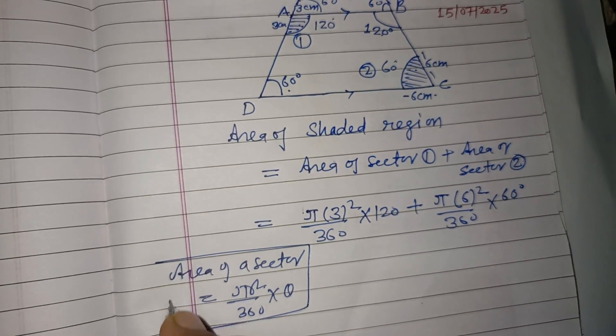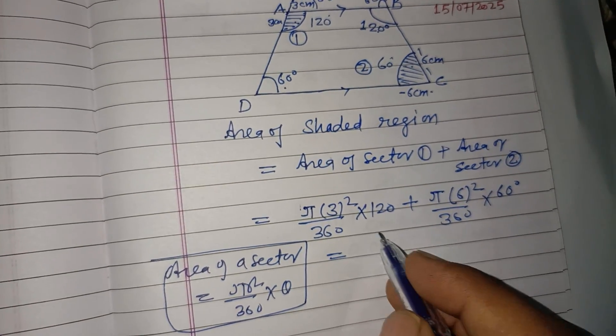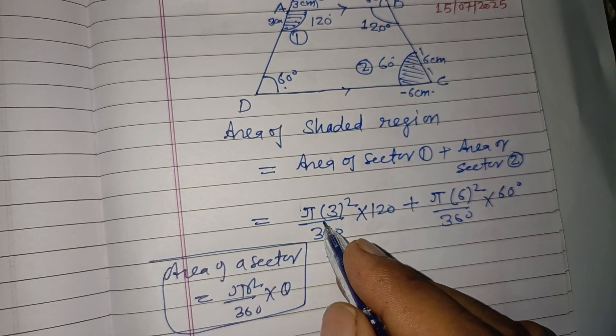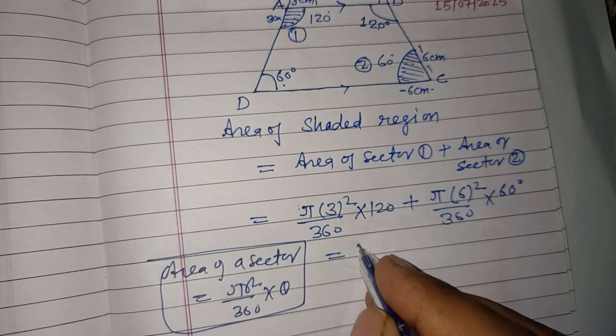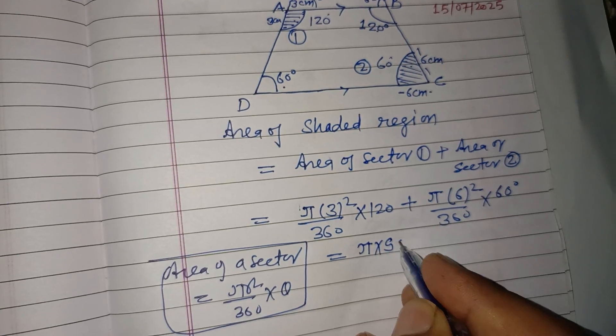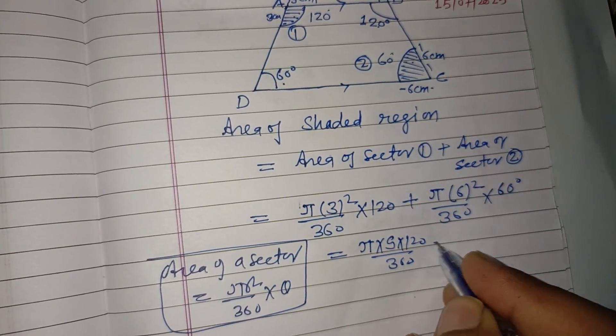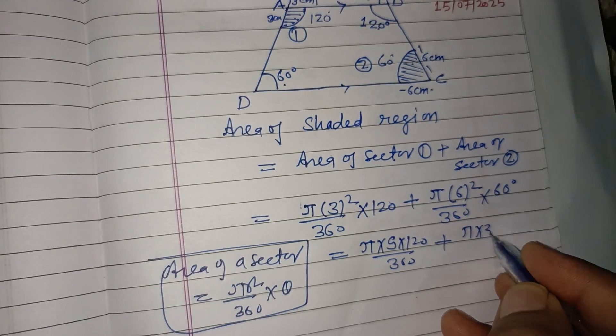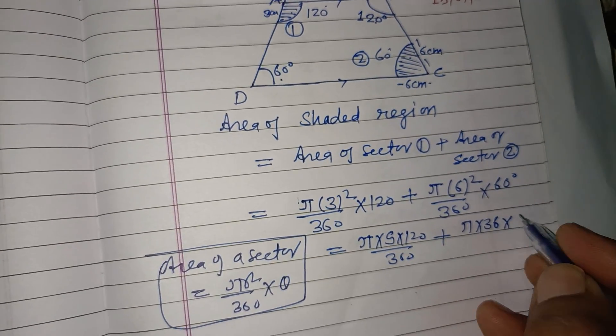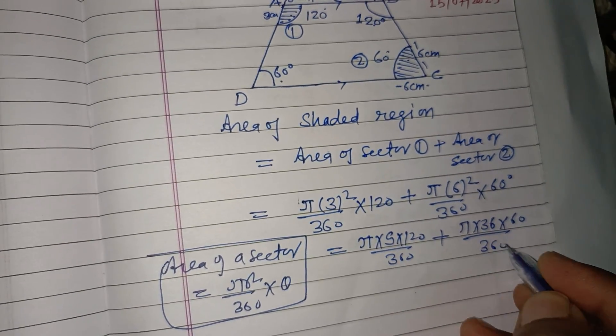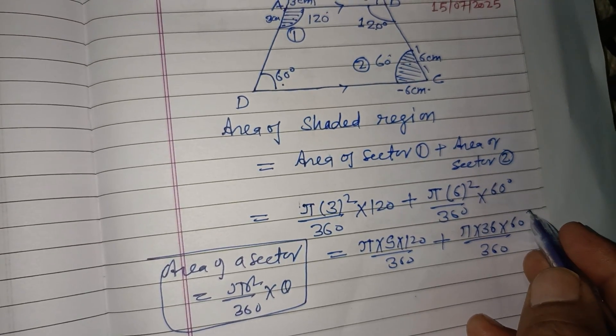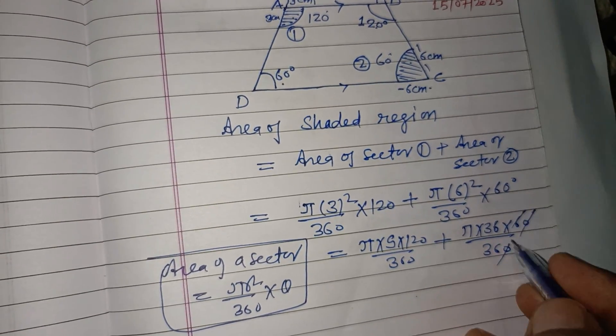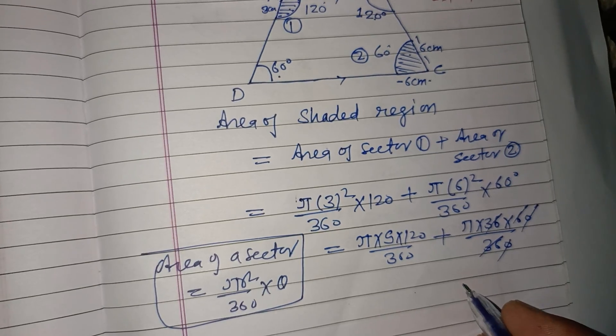So, using this formula here: π × 9 × 120/360, plus π × 36 × 60/360. The 360s cancel out.